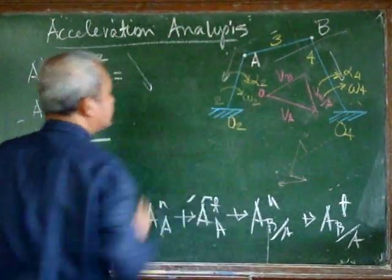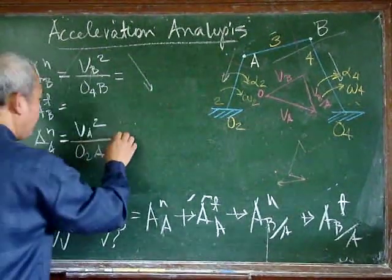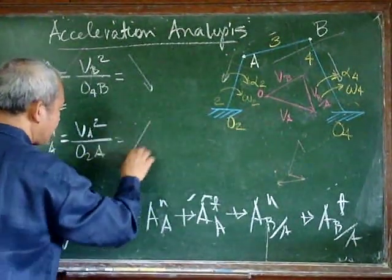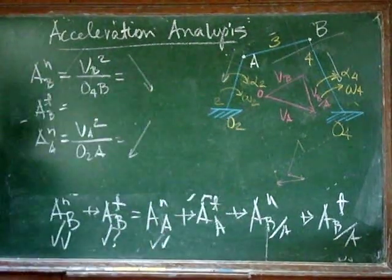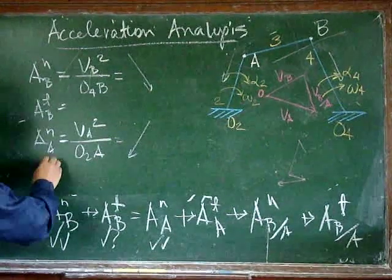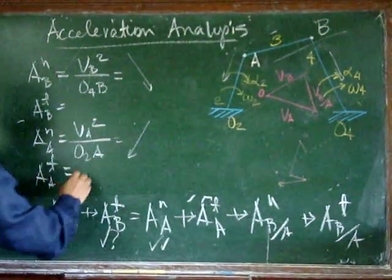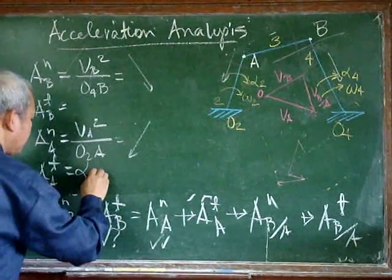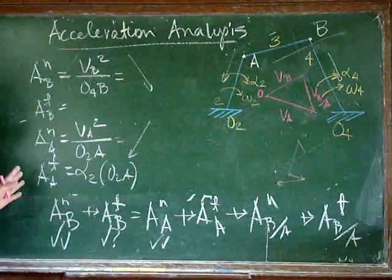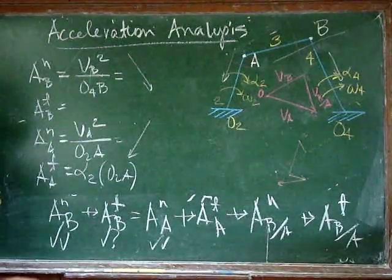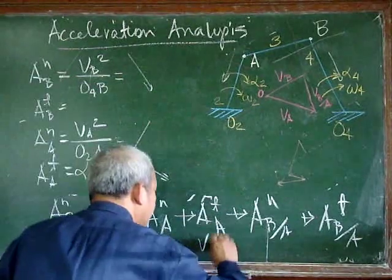The normal acceleration of A has known magnitude and known direction, so we can assign it two checks. The tangential acceleration of A equals alpha-2 multiplied by the distance O to A. Again, we know the magnitude and the direction, so this component also gets two checks.